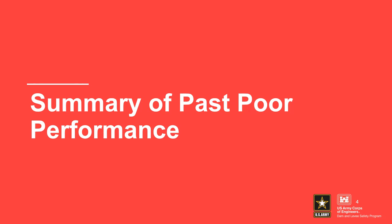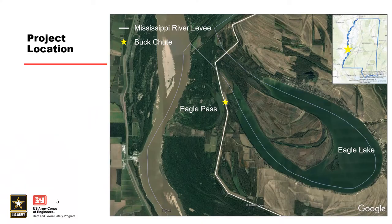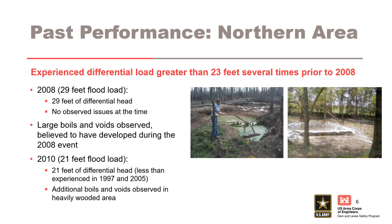A quick reintroduction of the project area and a summary of past performance at the levee: Buckshute is located along the main stem levee system of the Mississippi River and Tributaries Project, 16 miles northwest of Vicksburg, Mississippi. The mainline levee was constructed between Eagle Pass and Eagle Lake, two channel deposits associated with the Mississippi River. Buckshute is considered one of the weakest areas along the MR&T due to poor performance during previous flood events.